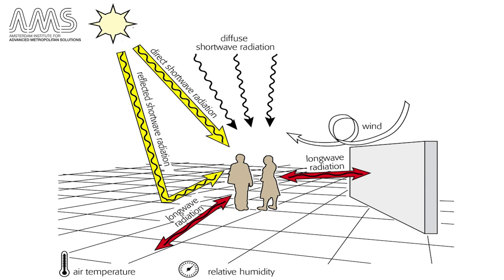There is also long wave radiation — in other words, the warmth that is emitted from objects in the city. For instance, when you are sitting in front of a wall that has been warmed during the day and is still emitting heat at night, that is what you feel as long wave radiation. Apart from that, wind, air temperature, and also relative humidity of the air play a role in how you experience temperature as a totality.